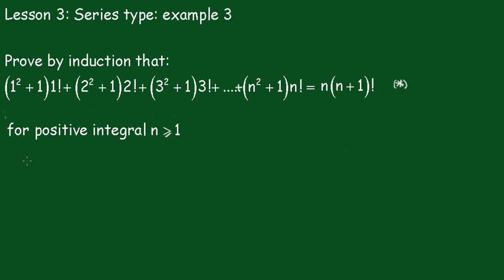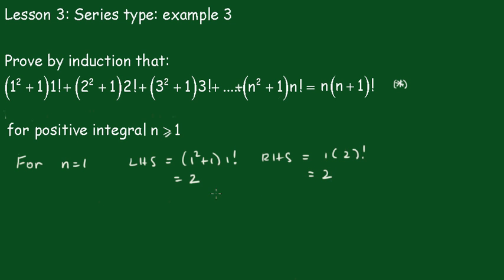For n equals 1, the left hand side is equal to 1 squared plus 1 times factorial 1, which equals 2. The right hand side is equal to 1 times 2 factorial, which also equals 2. Therefore the left hand side equals the right hand side, and the statement is true for n equals 1.